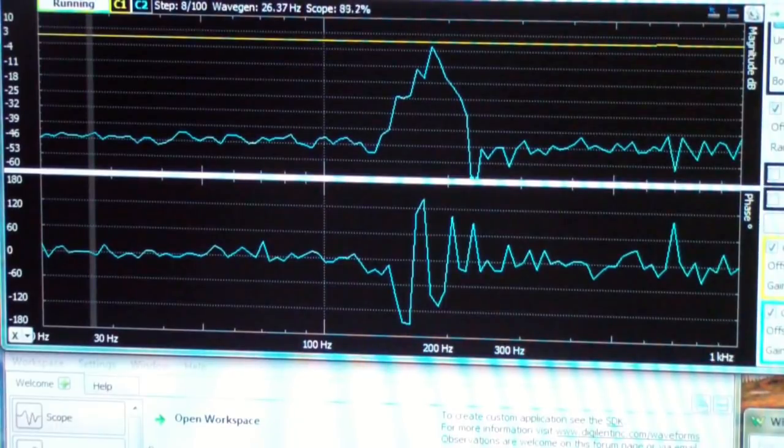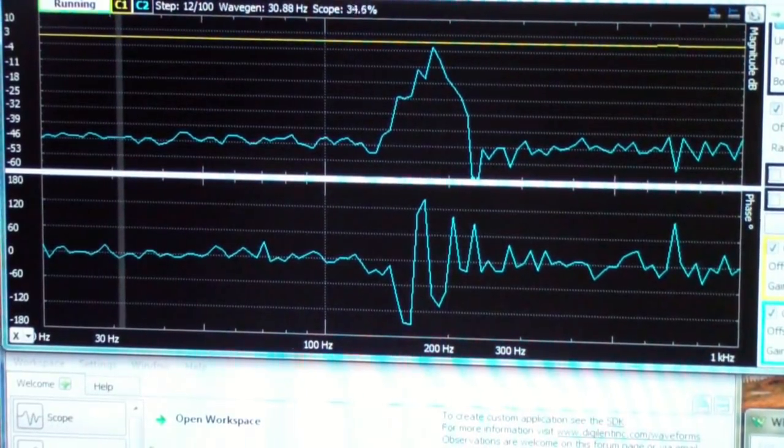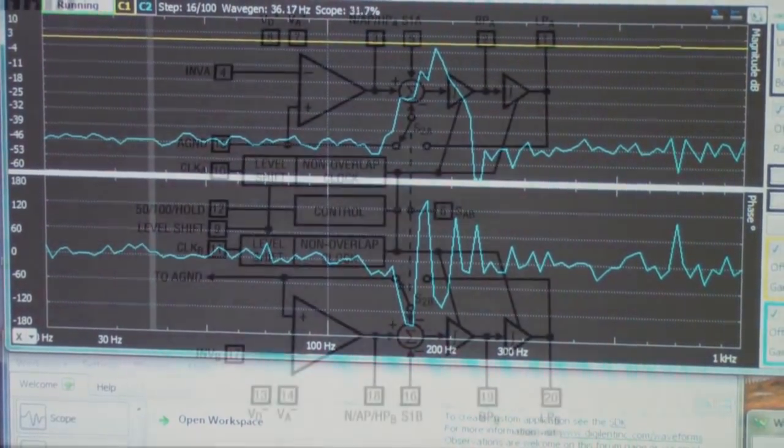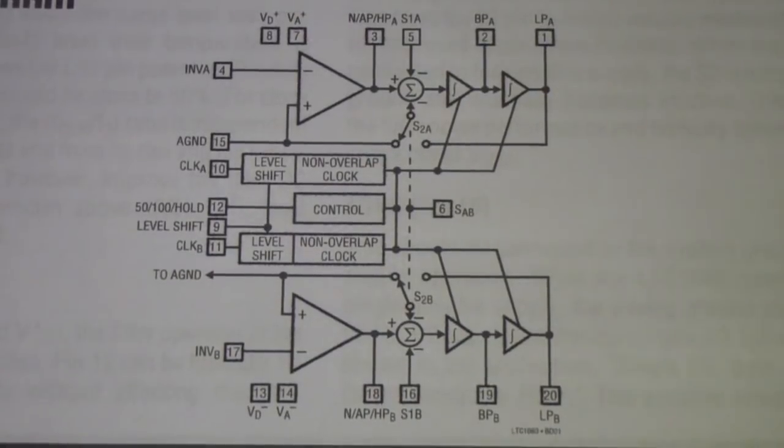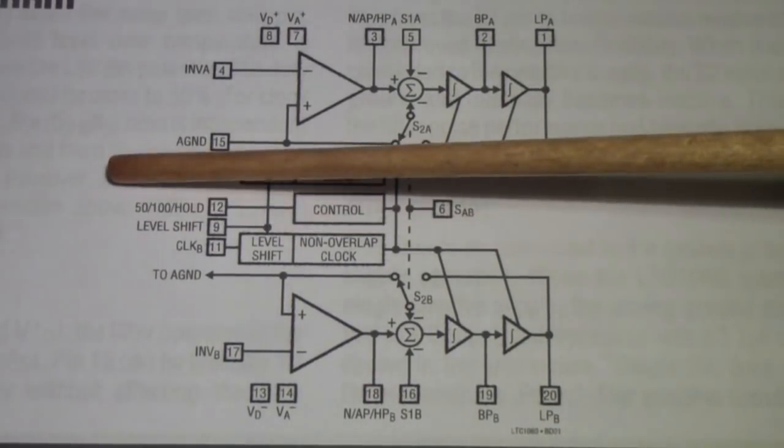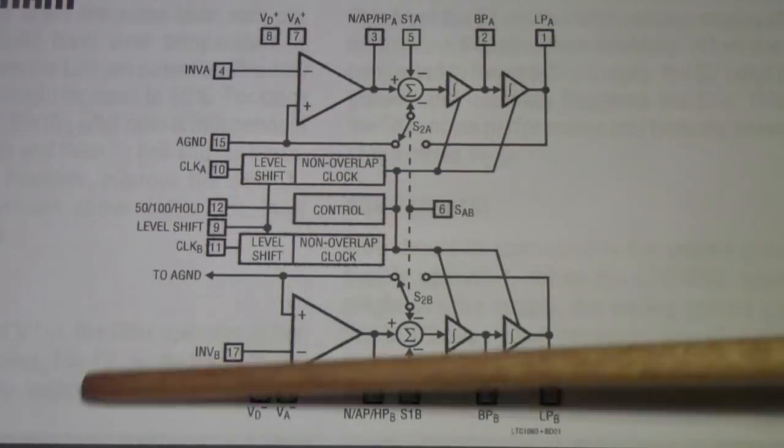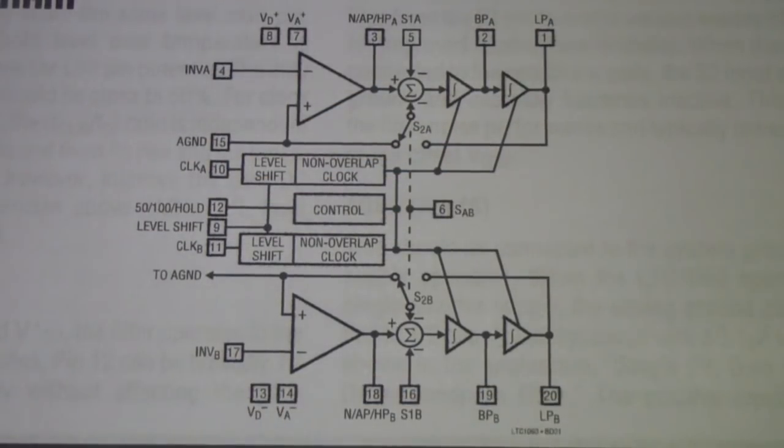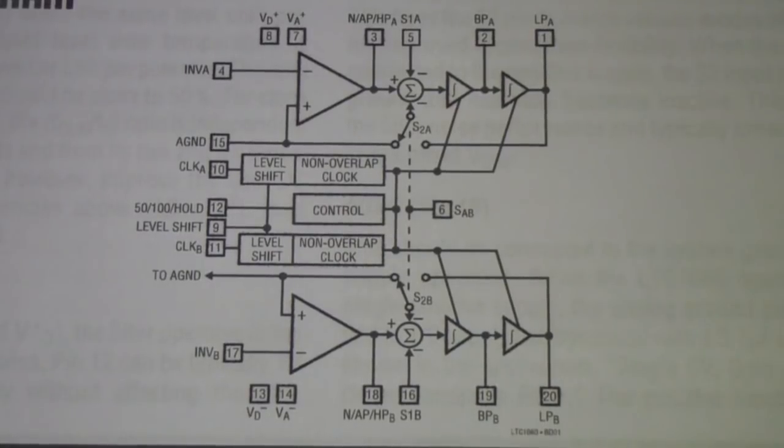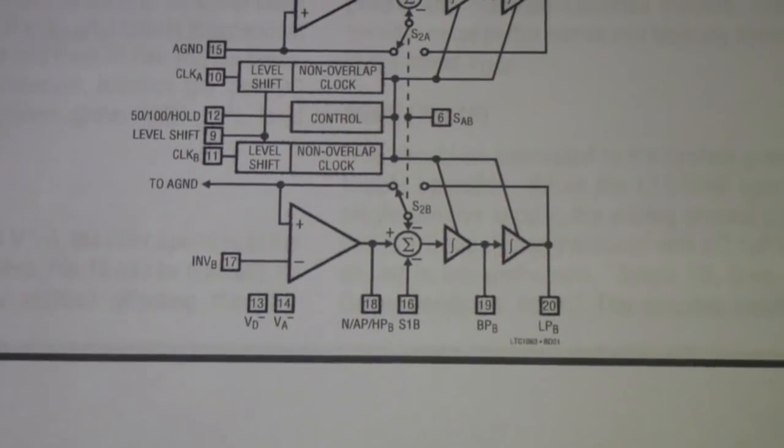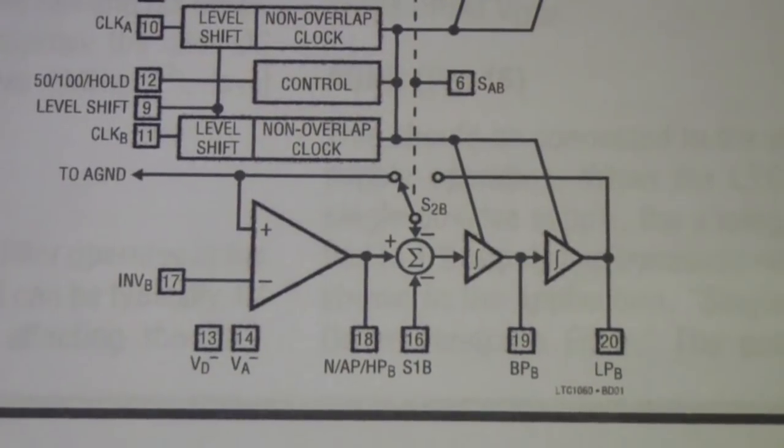So now let's take a look at the block diagram of the 1060. You can see that the chip is basically split along this line and everything up here is the same as everything down here. So that I can get a little bit bigger picture, I'm just going to focus on the bottom half and zoom in a little more on that.